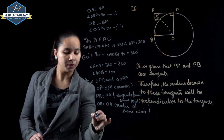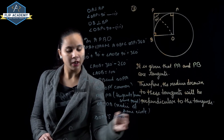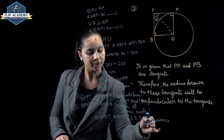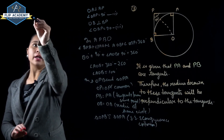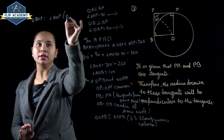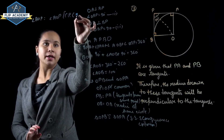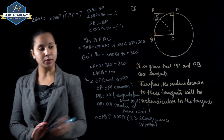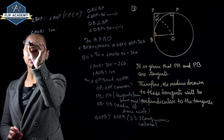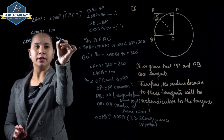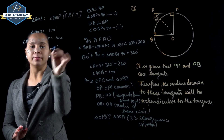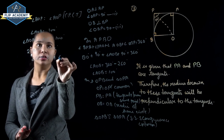Therefore triangle OPB is congruent to triangle OPA by the SSS (side-side-side) congruence criterion. So angle BOP equals angle AOP by CPCT. Since angle AOB equals 100°, we have BOP + AOP = 100°, and since they are equal, 2 × angle BOP = 100°, giving angle BOP equal to 50°.